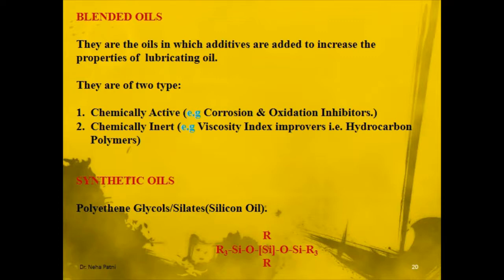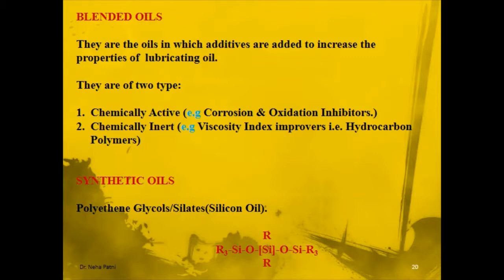There are two types of additives available. The first is a chemically active additive, which is used to enhance a chemical property of the lubricant — for example, a corrosion or oxidation inhibitor. The second is a chemically inert additive, used to target a physical property of the lubricant — for example, controlling viscosity variation with temperature.